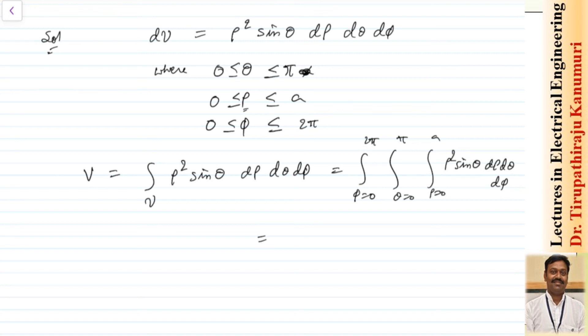If you do the integration one by one and substitute, this will become a³/3 × 2π × (-cos θ) evaluated from 0 to π. This becomes equal to (4/3)πa³.